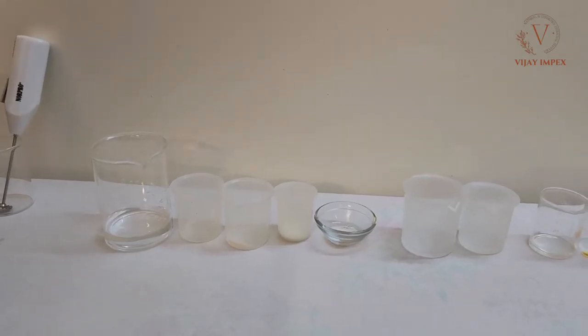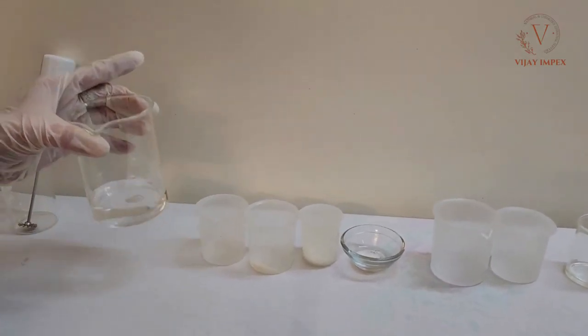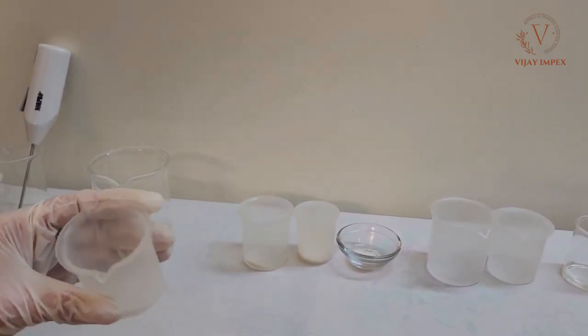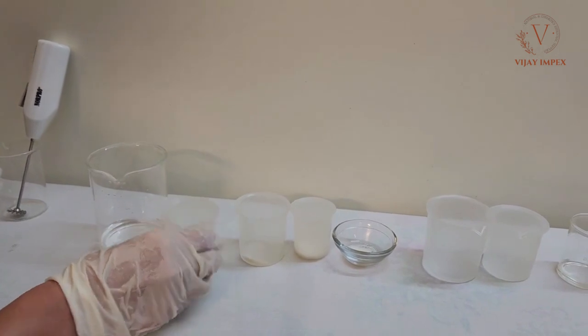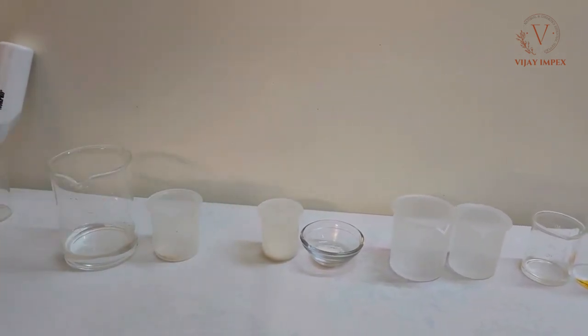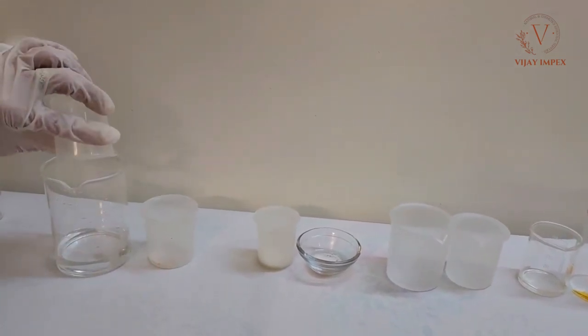Let's get started with the phase A ingredients. The first ingredient is water, then I have some potassium sorbate here. Potassium sorbate is a preservative booster so I'm going to add that. And we have some sodium gluconate. Sodium gluconate is our chelator so I'm going to add it into the water.